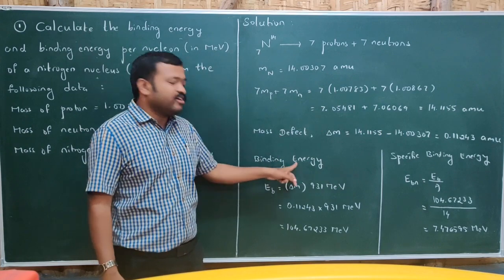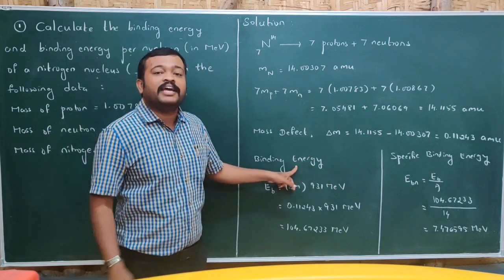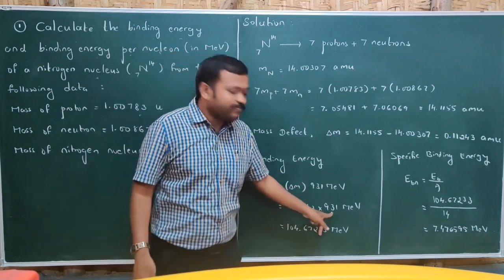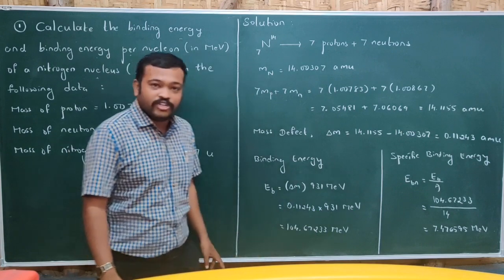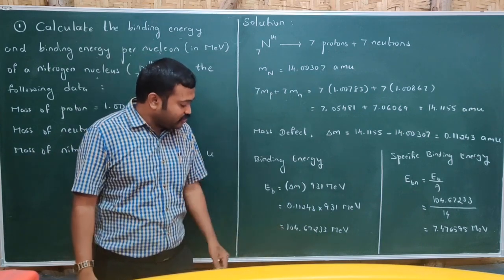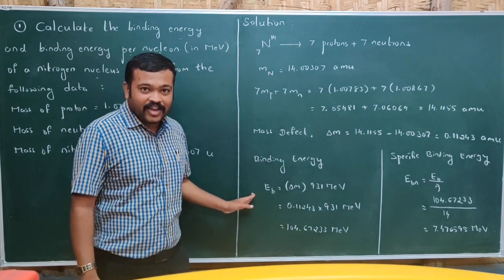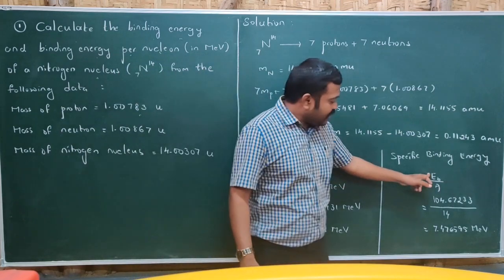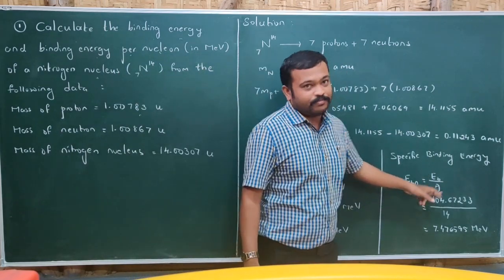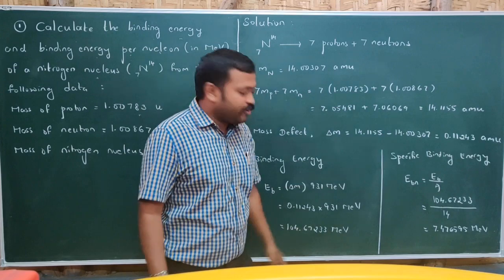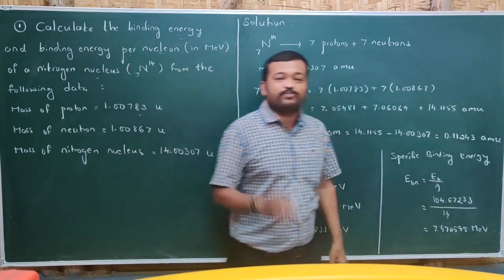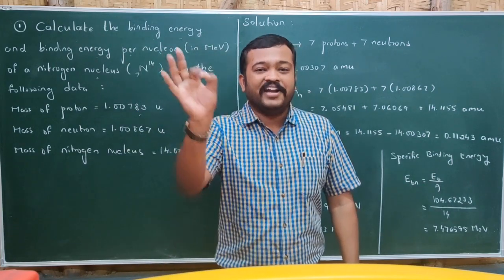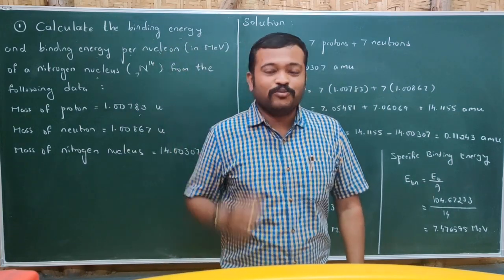Binding energy = mass defect × 931 MeV = 0.11243 × 931 = 104.67233 MeV. Next, calculate specific binding energy (binding energy per nucleon) = binding energy divided by mass number = 104.67233 divided by 14. This is the strategy to solve problems on binding energy. Now let us move on to the second problem.